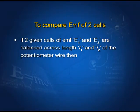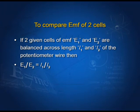Now, to compare the EMF of two cells — this is the second application of the potentiometer. If two cells have EMF E1 and E2, and the two cells are balanced across lengths L1 and L2 respectively of the potentiometer when the respective keys are connected one by one, then E1/E2 = L1/L2. There is an experiment based on this in the physics lab.